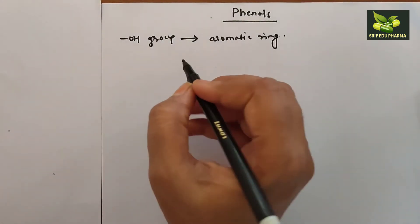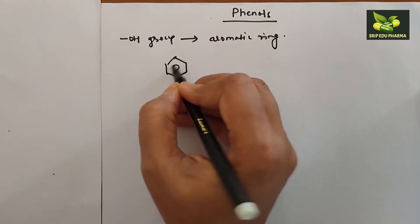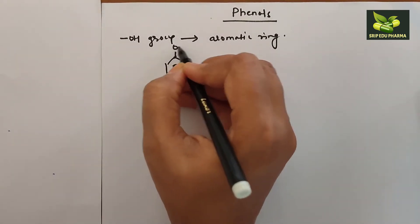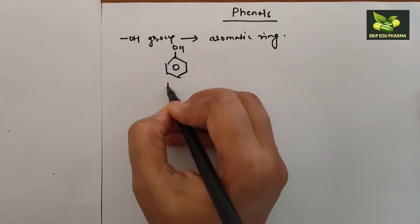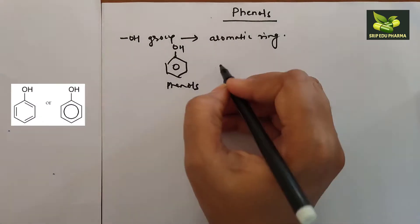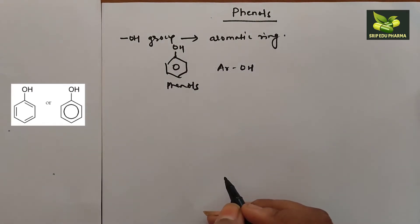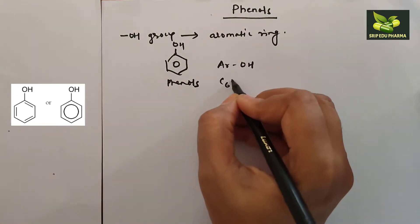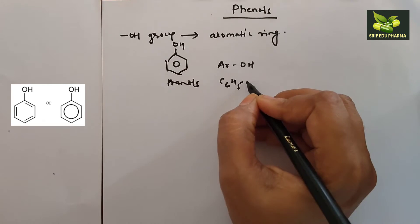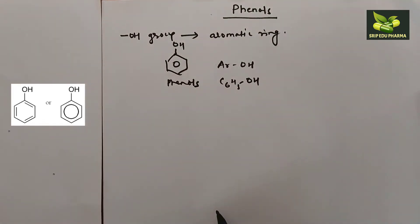How can we denote the phenols? If this is a benzene ring with OH, this is called phenols or we can say aromatic alcohol. We can also denote this by C6H5OH. This is called phenols.